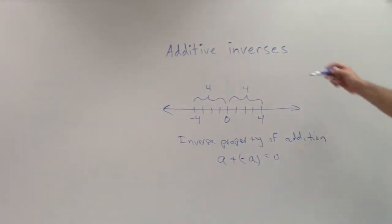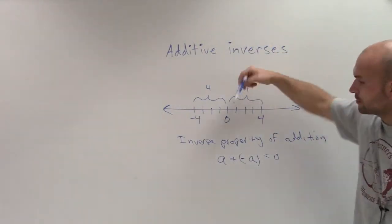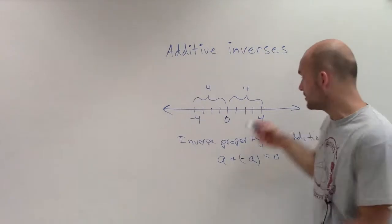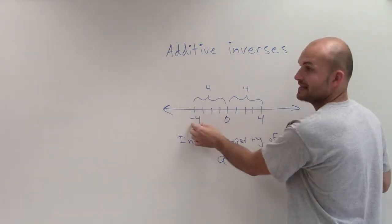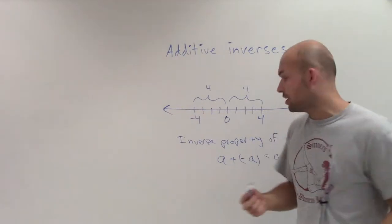So let's take a look at these two numbers. If I have the additive inverse, to find the additive inverse of a number, if you take that number 4 and you take the opposite sign, which would be negative 4, that's going to be what we call the additive inverse.